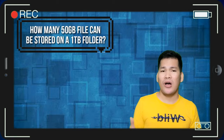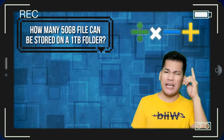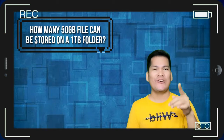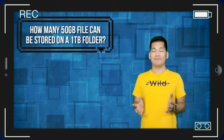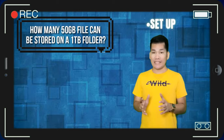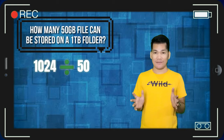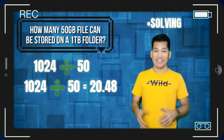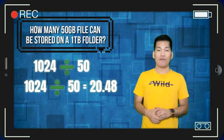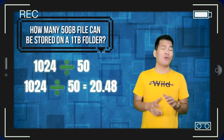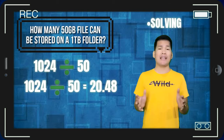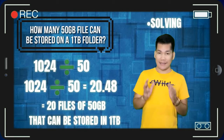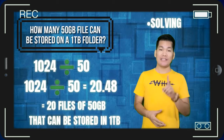What fundamental operation are we going to use in this problem? I think that's division. Correct — that's division. In setup, we have 1024 divided by 50. And in solving, 1024 divided by 50 equals 20.48. But since we are only looking for the number of files, the final answer is 20 files of 50 gigabytes that can be stored in one terabyte folder.